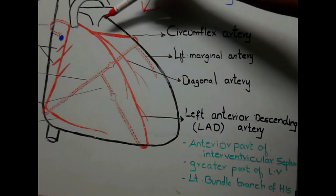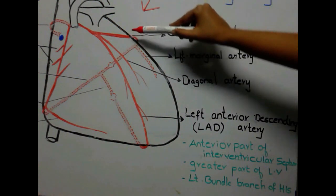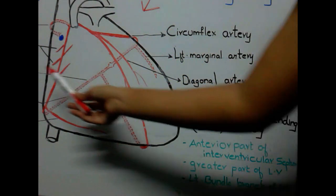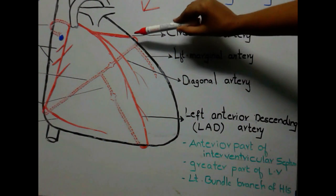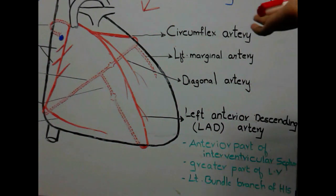Now the other branch here goes all around the heart, goes posteriorly and gets anastomosed with posterior ventricular artery. As this is going all around the heart, it is named as circumflex artery.